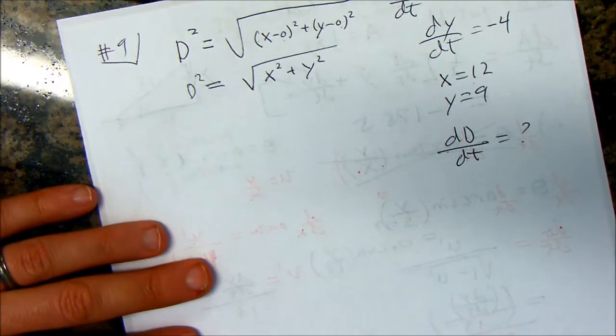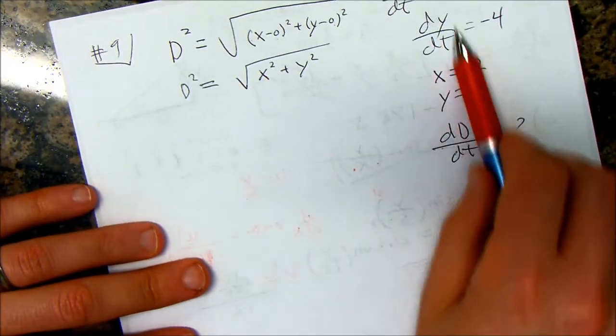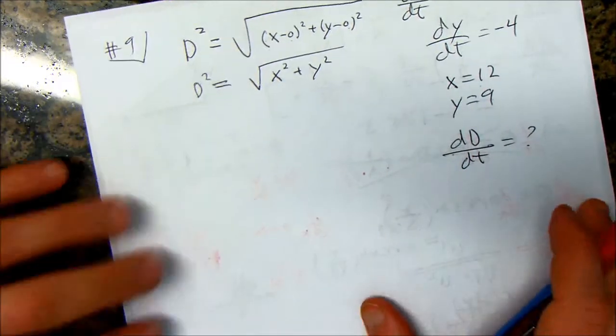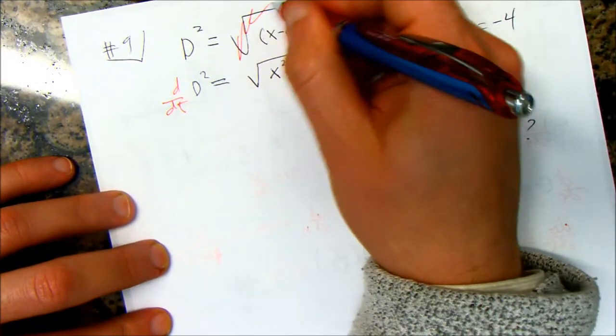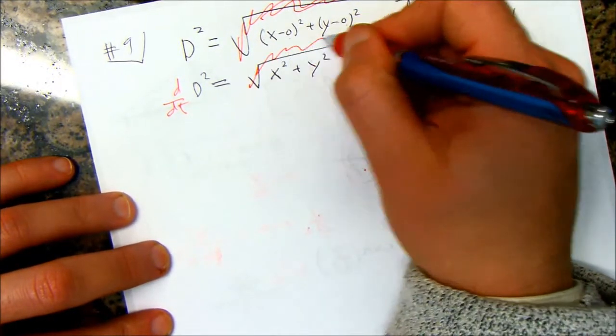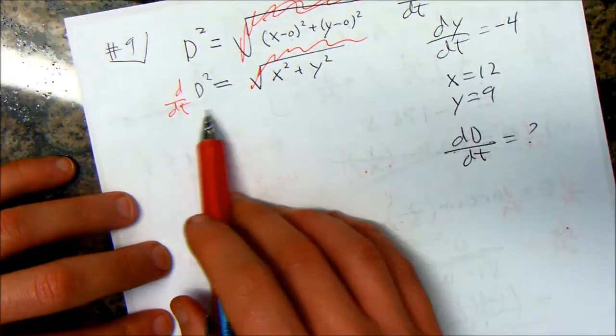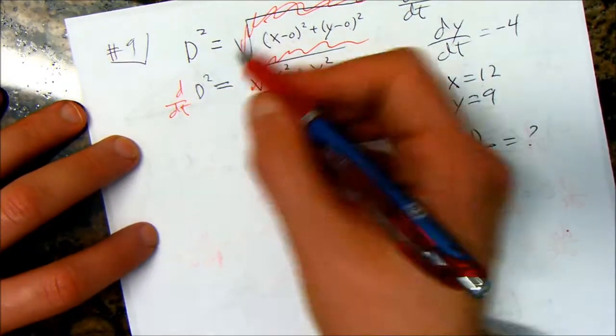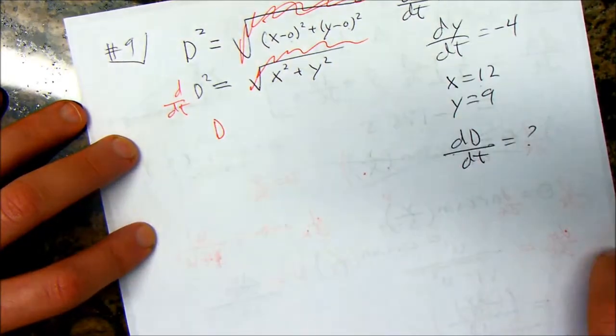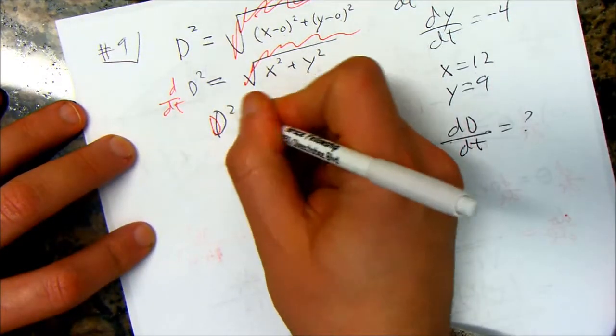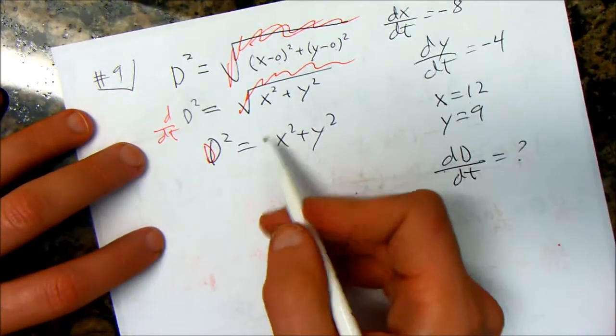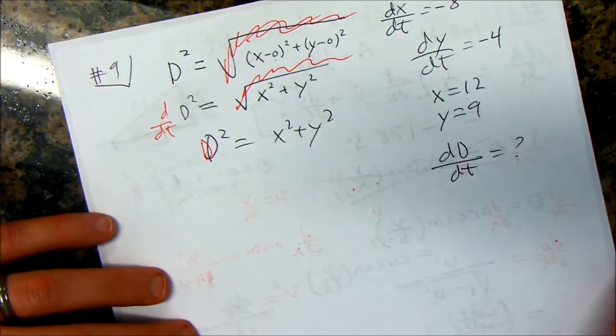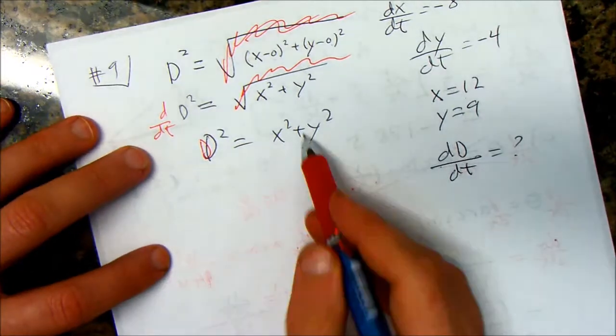So they said, how fast is the particle's distance from the origin? That means my distance formula is going to be x minus 0 squared plus y minus 0 squared, because the distance from the origin is what I care about. So that's nice of them. Now you've just got to do x squared plus y squared. I'm going to take the derivative of this thing with respect to time.